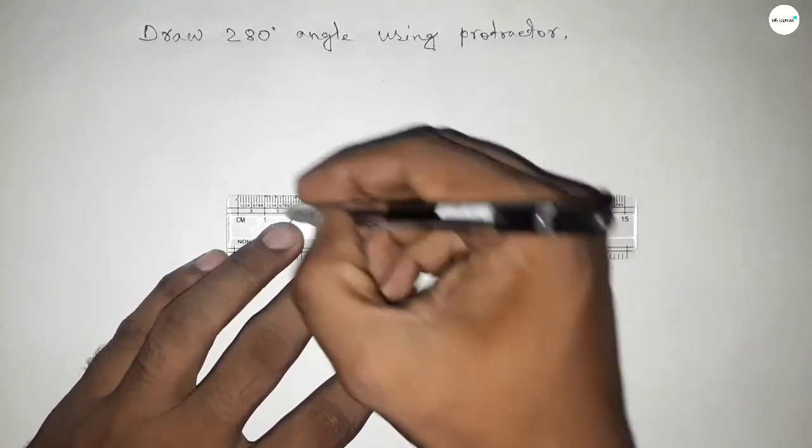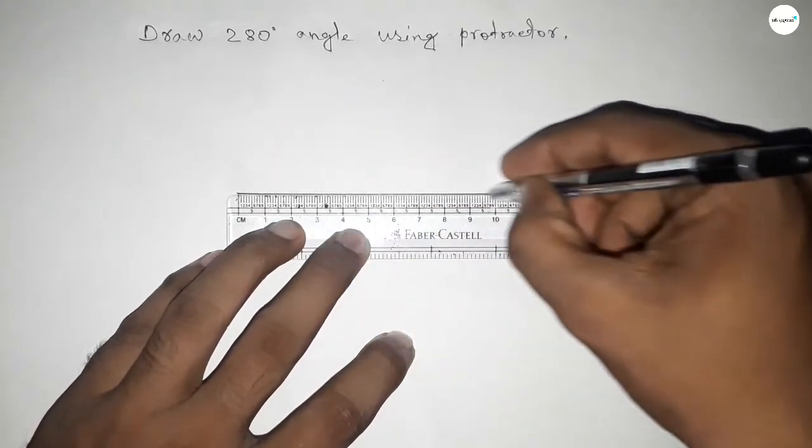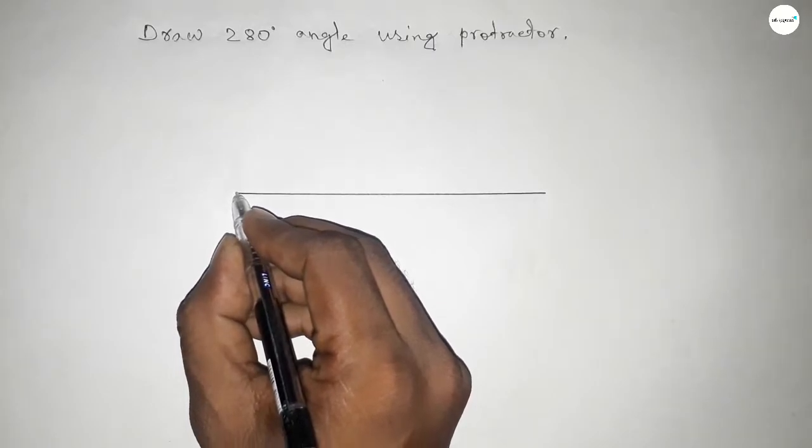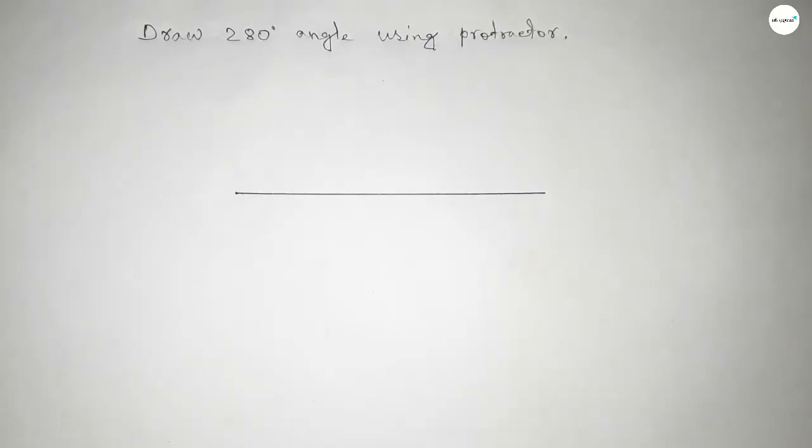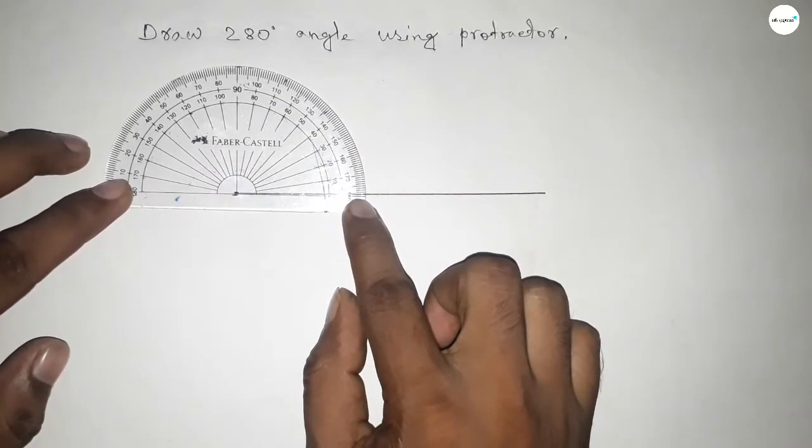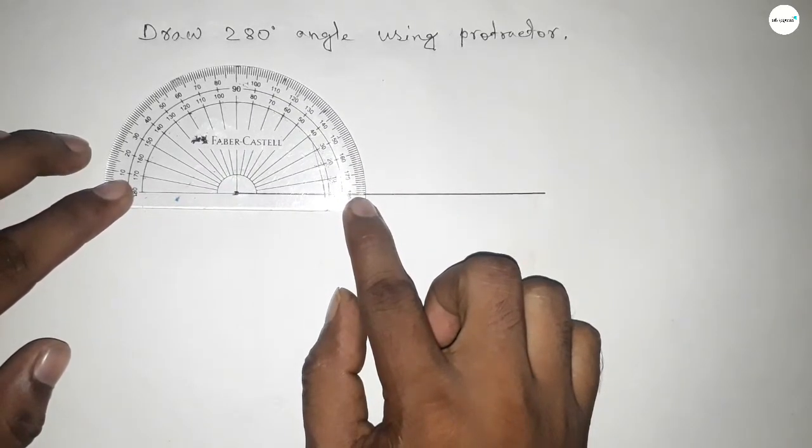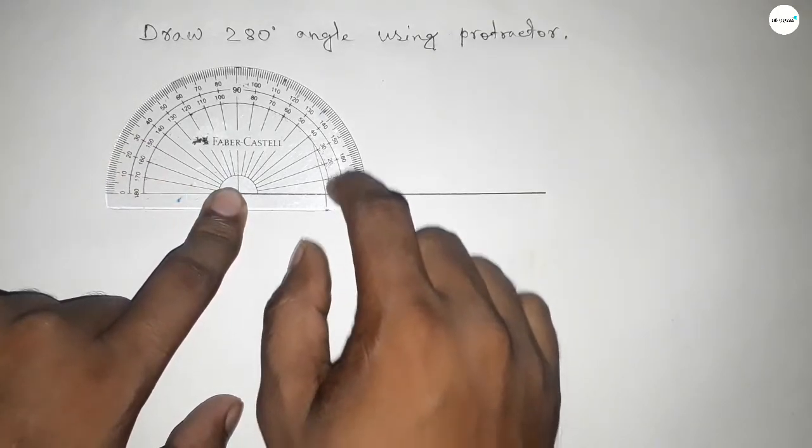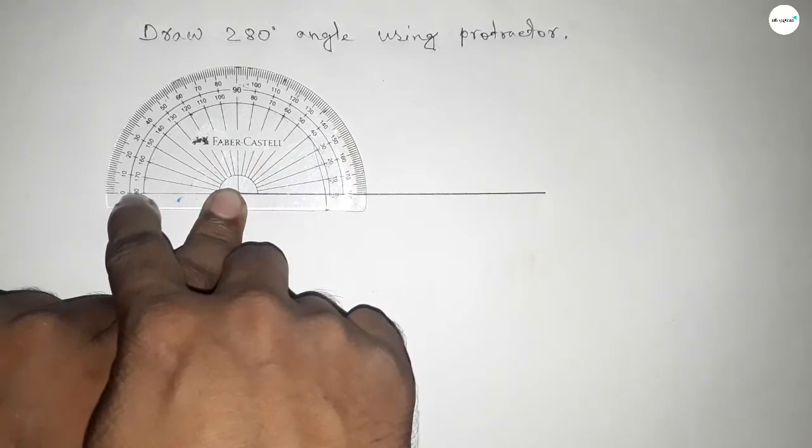First, drawing a straight line. Next, pointing out here to draw a 280 degree angle on this point. Now putting the protractor on the line perfectly, then counting the angle. This is up to 180 degrees, but we have to draw 280 degrees.